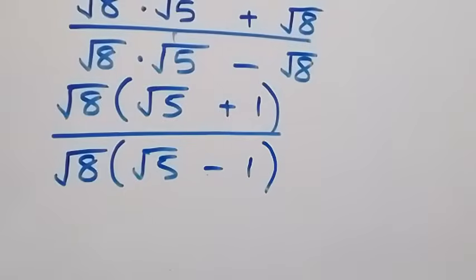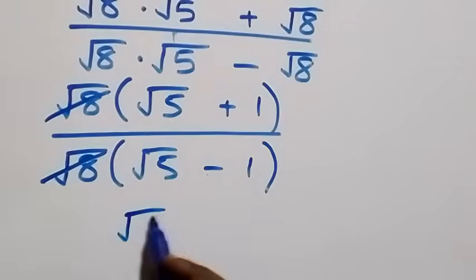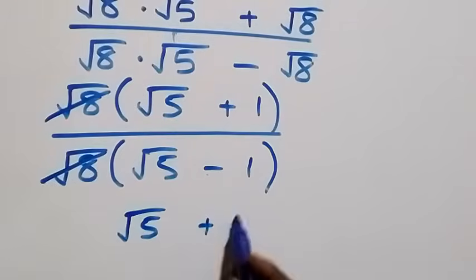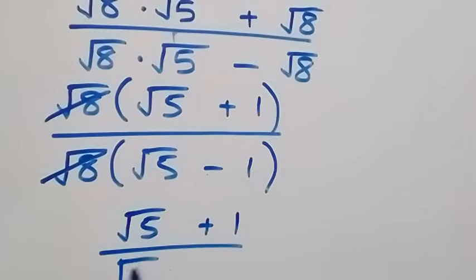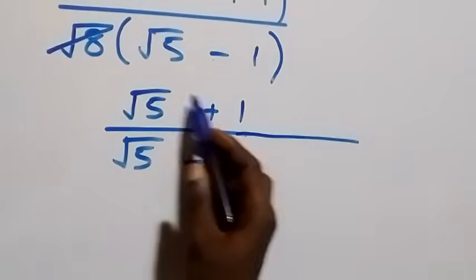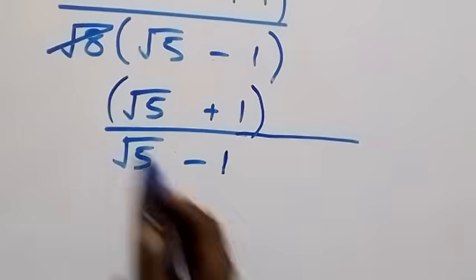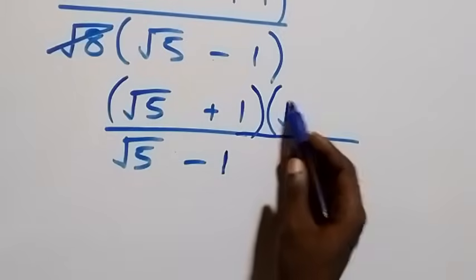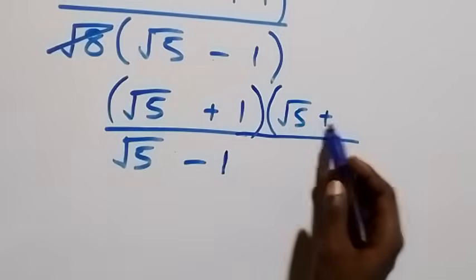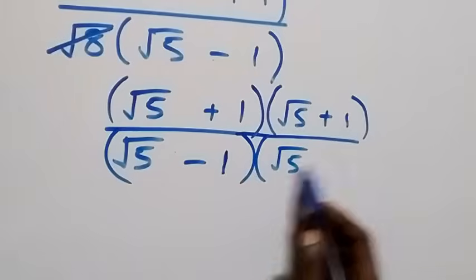The root eights cancel, and we have root five plus one over root five minus one. Now we can rationalize this and multiply both the numerator and denominator by the conjugate of the denominator. The conjugate of root five minus one is root five plus one.